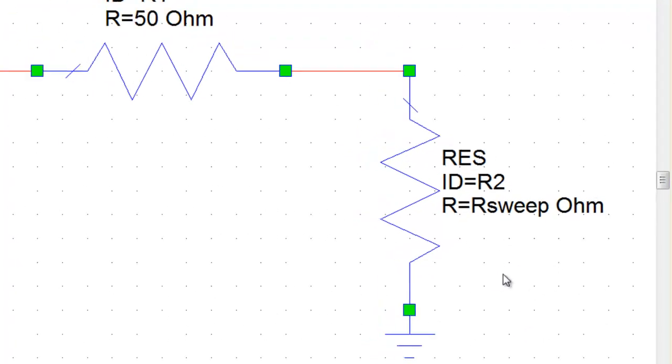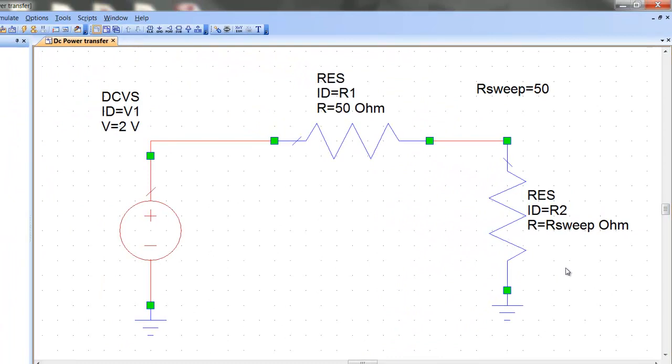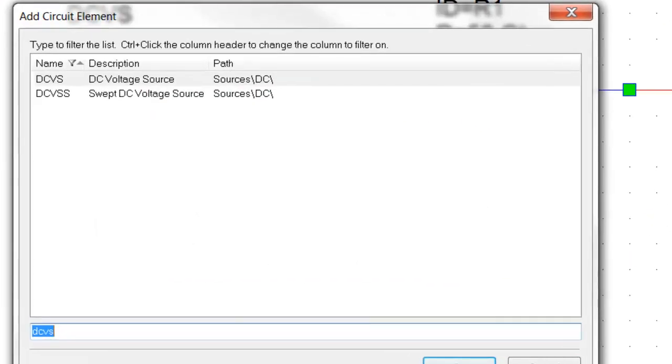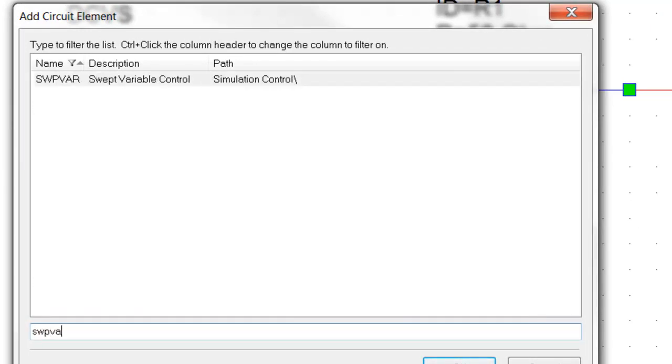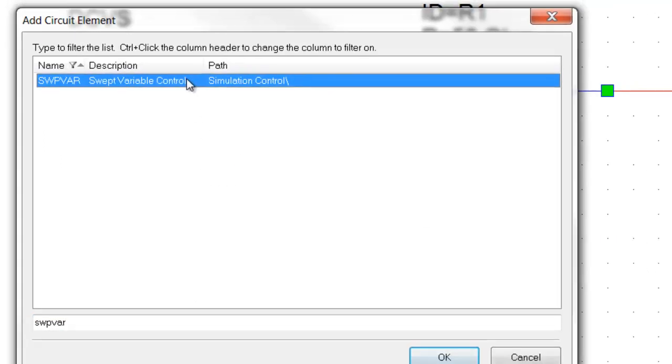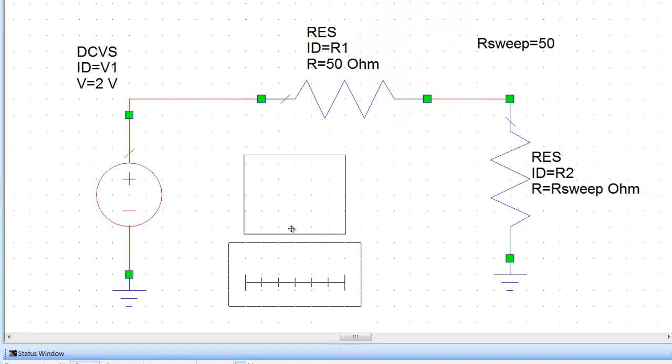Now what we need is an element that will allow us to sweep the value of RSweep across a specific range. So we press the usual control L and then we fetch an element called sweep variable swpvar as you can see here. Double click, place it on the schematic.